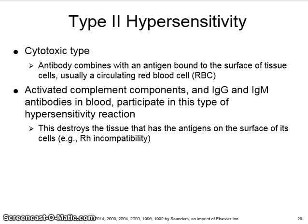With Type 2, or cytotoxic type hypersensitivity, antibodies combine with an antigen bound to the surface of tissue cells, usually a circulating red blood cell. It also activates the complement components and IgG and IgM antibodies in blood. This destroys the tissue that has the antigens on the surface of the cell. A Type 2 reaction occurs in incompatible blood transfusions and in Rh incompatibility between the mother's antibodies and the newborn's red blood cells.